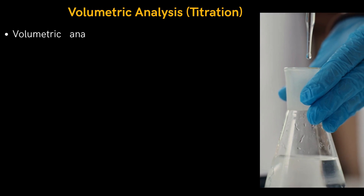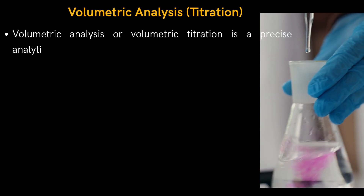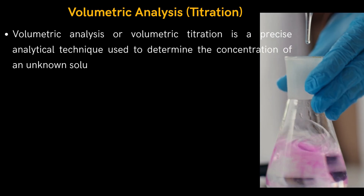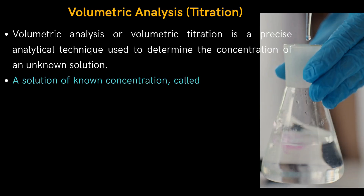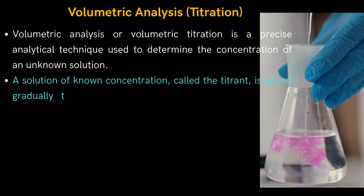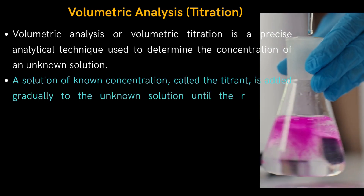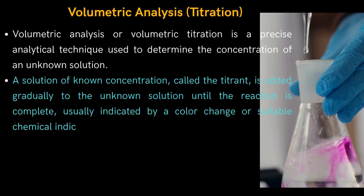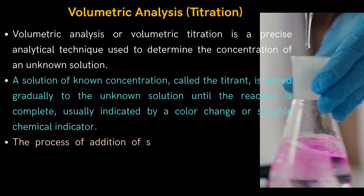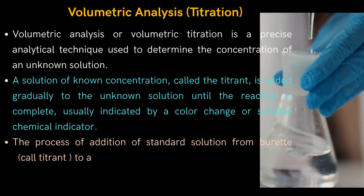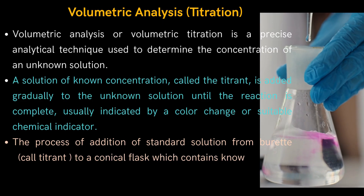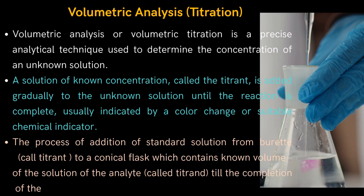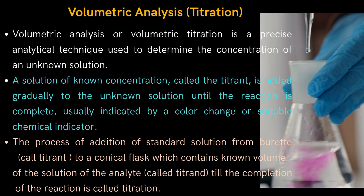Here we will know what is volumetric analysis. Volumetric analysis or volumetric titration is a precise analytical technique used to determine the concentration of an unknown solution. A solution of known concentration, called the titrant, is added gradually to the unknown solution until the reaction is complete, usually indicated by a color change or suitable chemical indicator. The process of adding a standard solution from a burette to a conical flask containing a known volume of the analyte solution until the completion of the reaction is called titration.